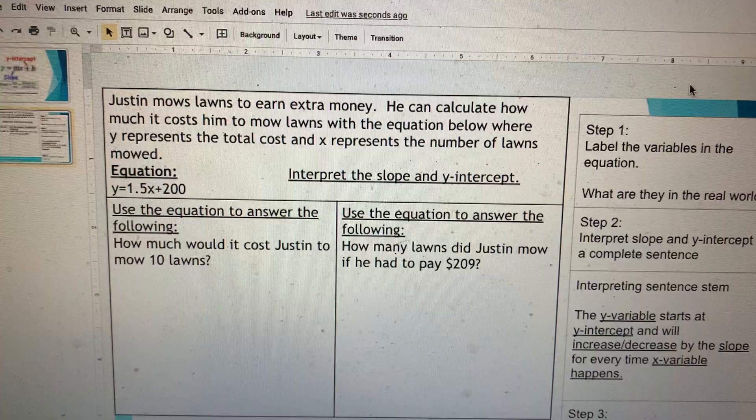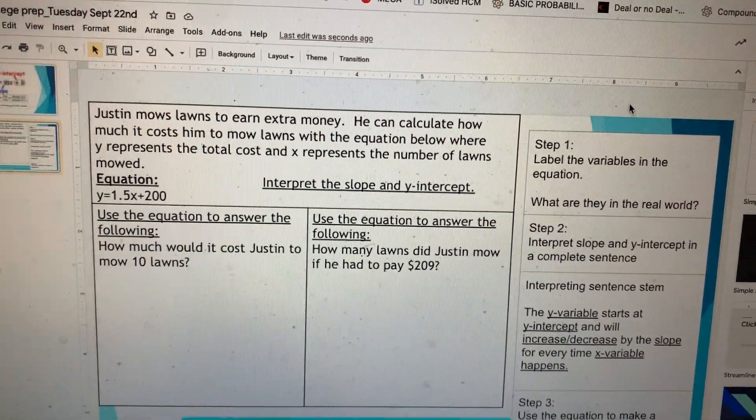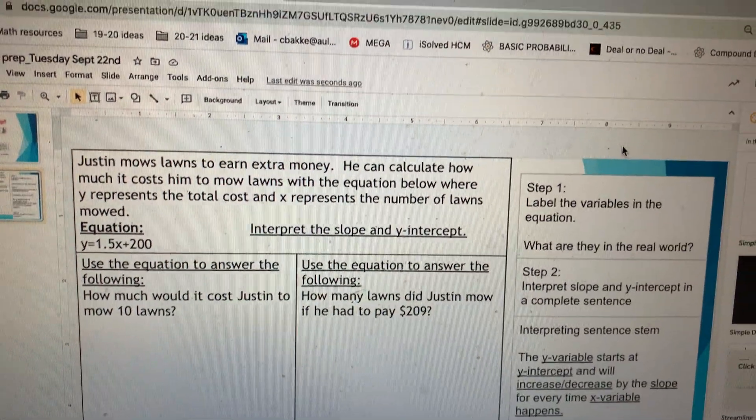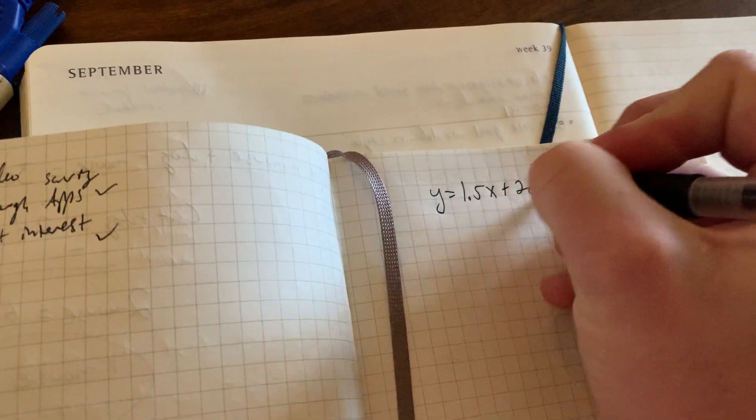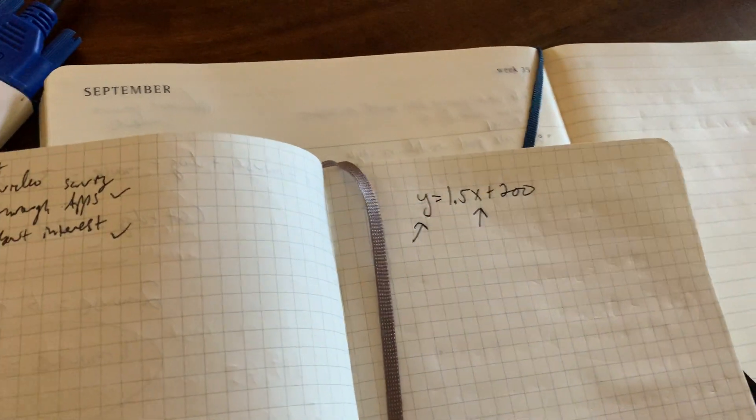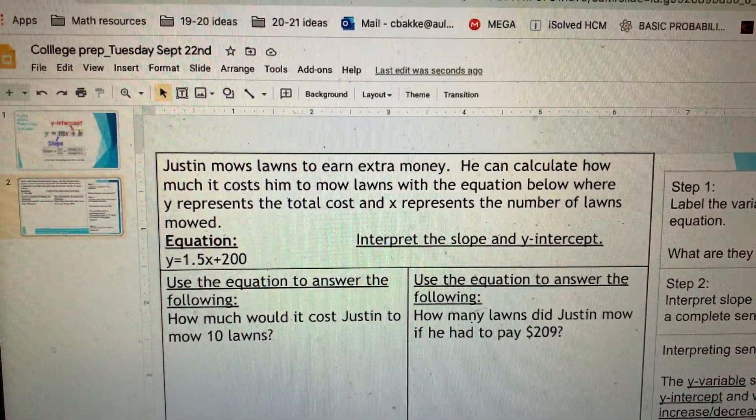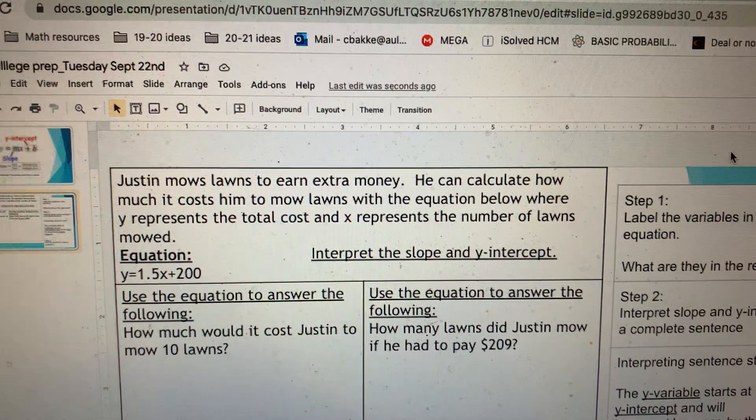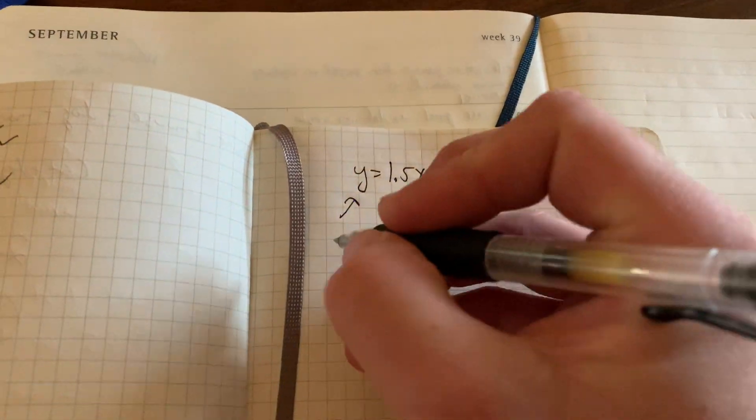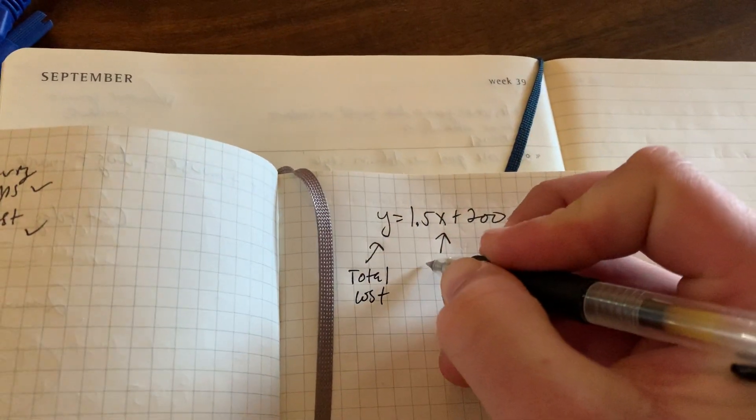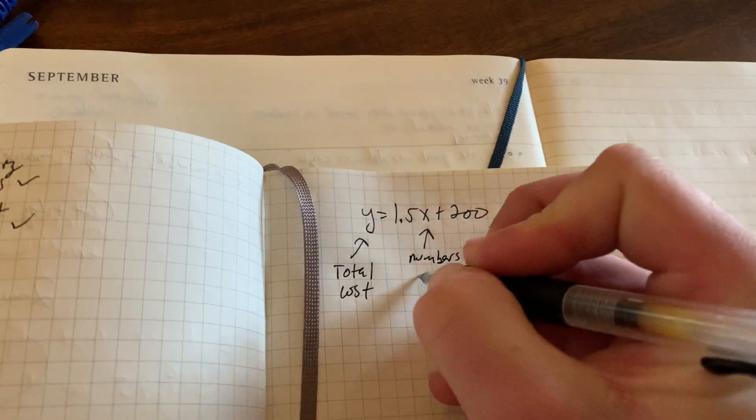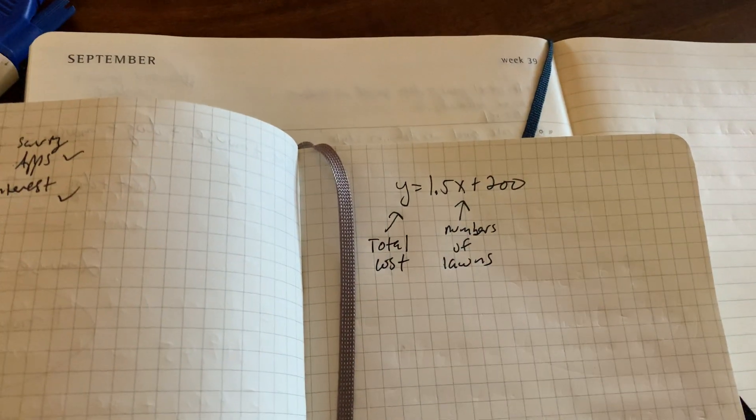Right here, Justin mows lawns to earn extra money. He can calculate how much it costs him to mow lawns with the equation below. Y equals 1.5x plus 200. I'm going to go ahead and jot that down: y = 1.5x + 200. And I'm going to set up to label what Y and X represent. He can calculate how much it costs him to mow lawns, where Y represents the total cost, and X represents the number of lawns mowed. So Y is his total cost, X is the number of lawns that he mows.